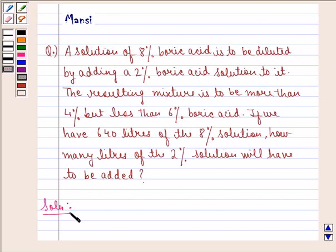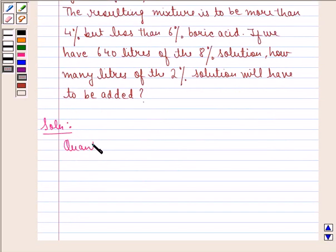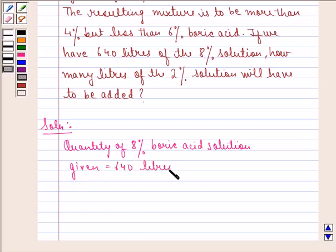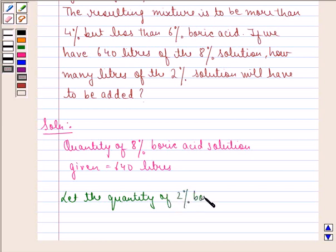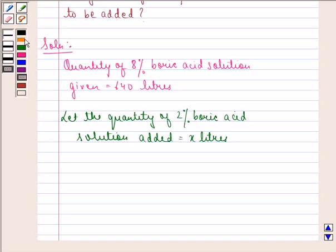Let us solve this question. We see that quantity of 8% boric acid solution given is equal to 640 liters. Now let the quantity of 2% boric acid solution added be equal to x liters.